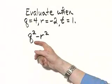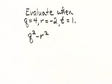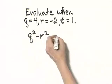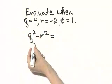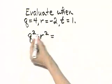Let's evaluate this expression for these replacement values. So be very careful. Instead of Q, I'll write 4. So that's 4 squared.